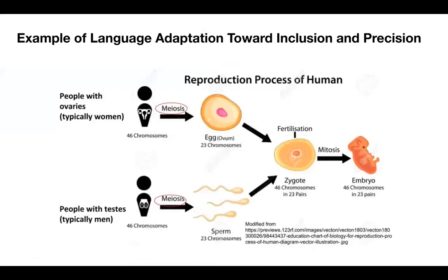Here's one example of adapting language towards inclusion and precision. Here's a typical meiosis diagram: people with ovaries, also labeled typically women, producing eggs; people with testes, typically men, producing sperm. This differs in a small but important way from diagrams that show a stereotypical male or female figure. Here we're emphasizing what's important — it's about meiosis, not about a person's presentation, but about whether they have ovaries or testes. This is modified from a pre-existing document, and while it's not the be-all end-all of language for meiosis, it's an example of how we can adapt existing language.